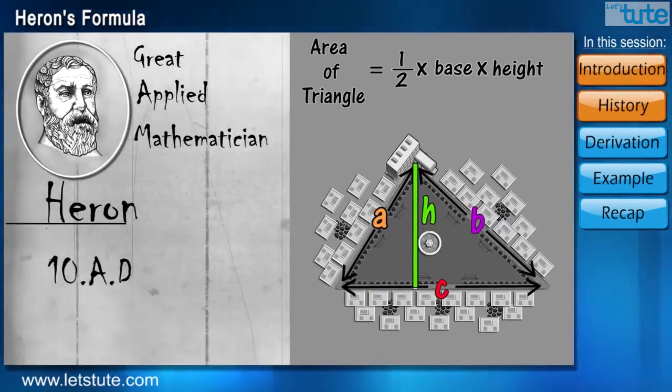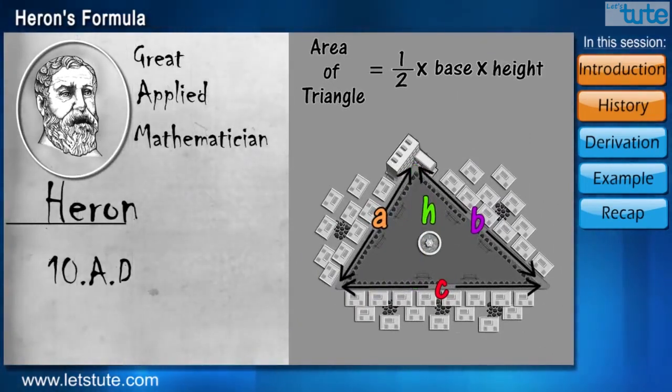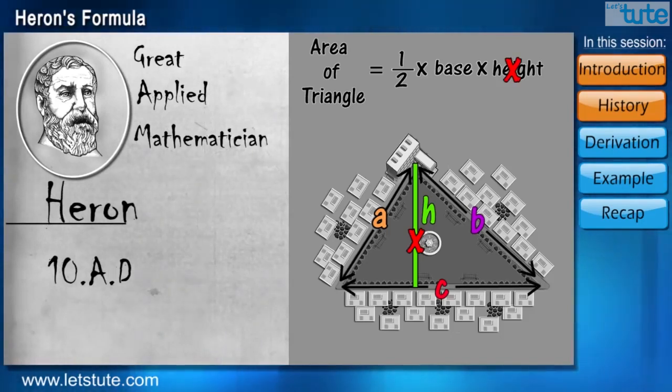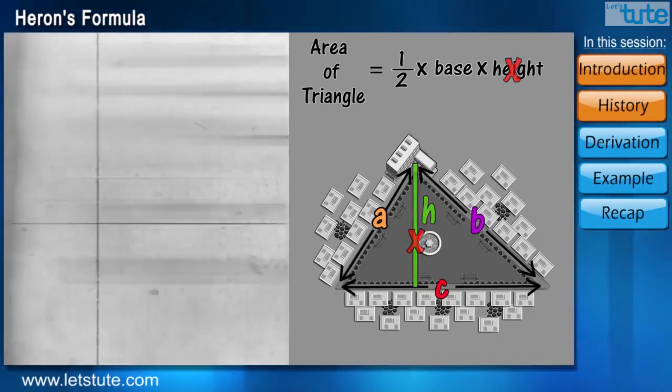He tried to replace the value of H in terms of A, B and C, so that we do not need the value of H to calculate the area. Let's have a brief look at how the formula was derived.